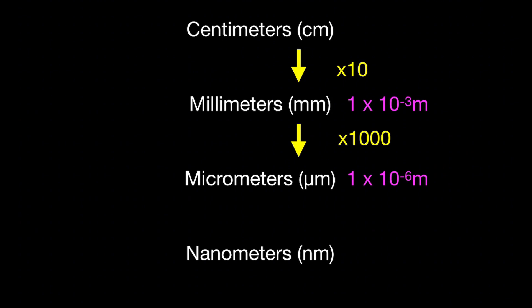Continuing to get even smaller: there are 1000 nanometers in every micrometer, so to convert from micrometers to nanometers you again multiply by 1000. In scientific notation, one nanometer is 10 to the power of minus 9 meters.